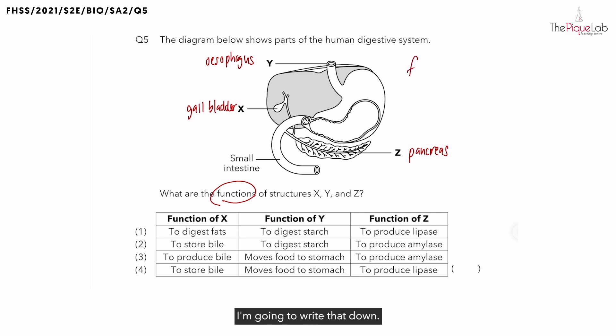So fats is digested in the SI. I'm going to write that down. And what is fats digested to? It is digested to fatty acids and glycerol. So can you say that the function of the gallbladder is to digest fats? No, that happens in the small intestines. So option one is already out.